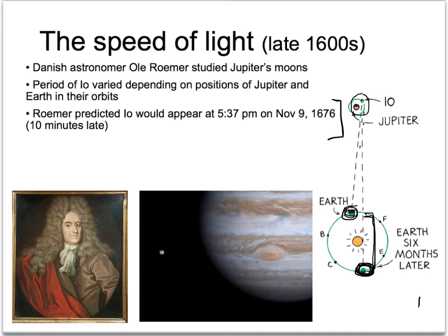And his prediction turned out to be true. In fact, Io showed up ten minutes late in the sky on November 9th, 1676.